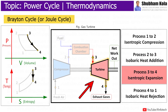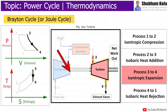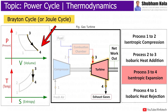Process 3 to 4 is the isentropic expansion process, where the compressed and heated gas expands adiabatically from state 3 to state 4 in the turbine blades. The gas does work on the surroundings and loses internal energy. Work is done by the turbine, and again the entropy remains unchanged. Since it is an expansion process, the volume of the gas increases.